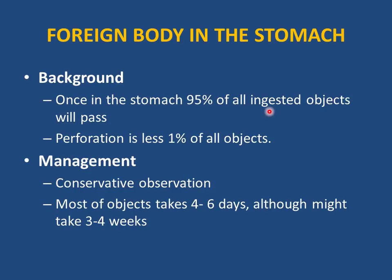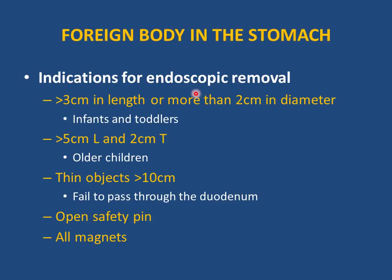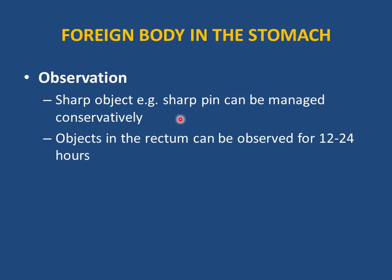Foreign body in the stomach: 95% of all ingested objects pass without problem; perforation is rare (less than 1%). Management is observation — reassure parents. Most objects pass in 4-6 days, sometimes up to 3-4 weeks. Follow up after one month. Remove if unlikely to pass through the duodenum: objects >3 cm in infants/toddlers, >5 cm in older children, thin objects >10 cm that haven't passed the duodenum, open safety pins, and all magnets. Sharp objects in the stomach can be observed; objects in the rectum can be observed 12-24 hours.